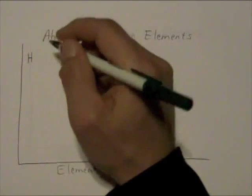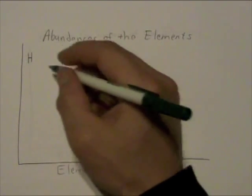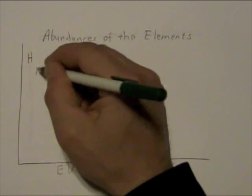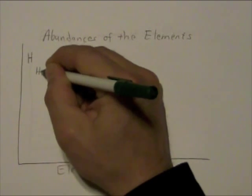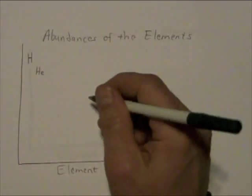Which are a lot of hydrogen, so very high up in this plot, hydrogen being about three-fourths of the total, helium being the next most common, about one-fourth of the total.